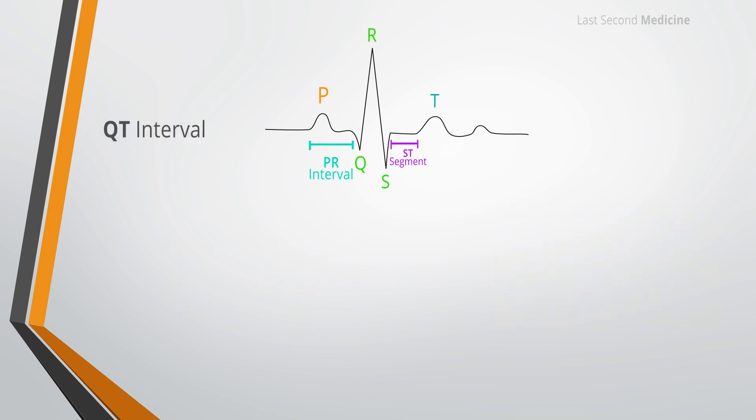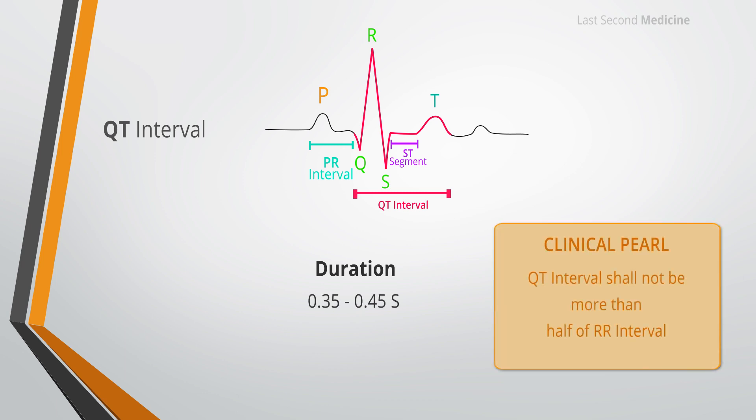Now the QT interval. The QT interval is measured from the beginning of the QRS complex to the end of the T wave and represents the total time taken for depolarization and repolarization of the ventricles. The QT interval lengthens as the heart rate slows, and thus when measuring the QT interval, the heart rate must be taken into account. As a general guide, the QT interval should be 0.35 to 0.45 seconds and should not be more than half of the interval between adjacent R waves, that is the R-R interval.